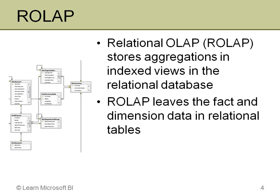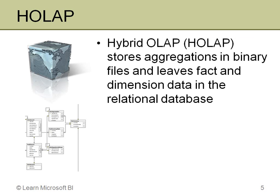ROLAP is kind of the opposite approach. It stores aggregations in indexed views in the relational database, building those new indexed views and storing them in the database. In addition, it leaves the dimension data and fact data where they are in the dimension and fact tables. As a result, you don't have much additional storage — just what's required to create and store those indexed views — so total disk space is generally negligibly larger than the relational data warehouse alone.